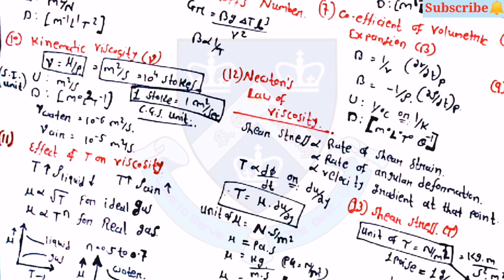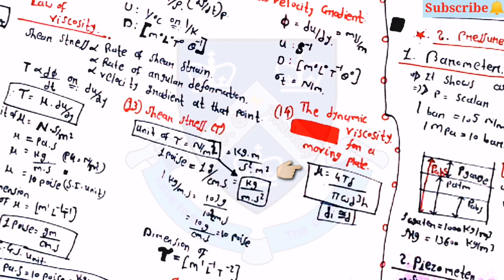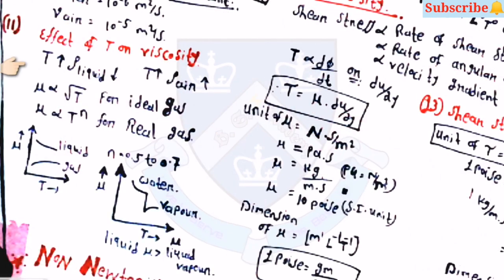Newton's law of viscosity states that shear stress is proportional to the rate of shear strain, or tau is proportional to du by dy, so tau equals mu into du by dy. The unit of mu is newton-second per meter squared. The unit of shear stress tau is newton per meter squared. The fourteenth property is dynamic viscosity for a moving plate: mu equals 4 into T into delta by pi w d-cube h.